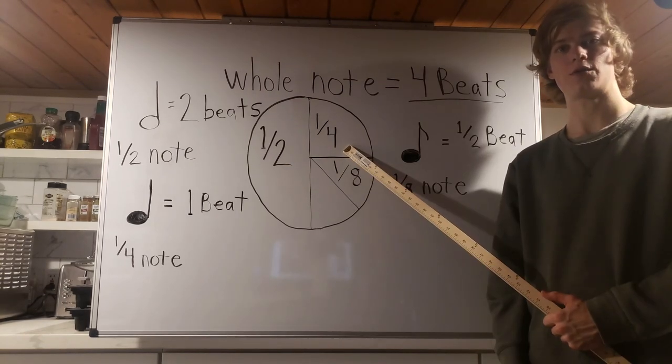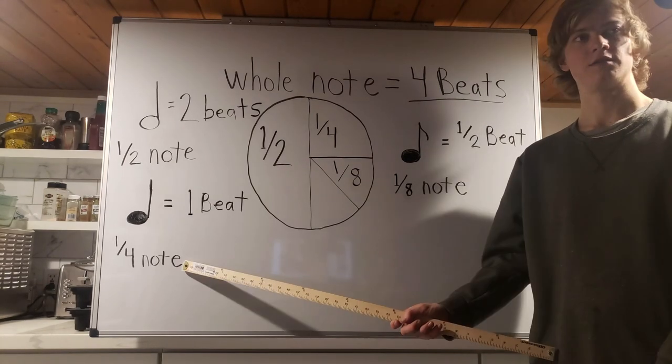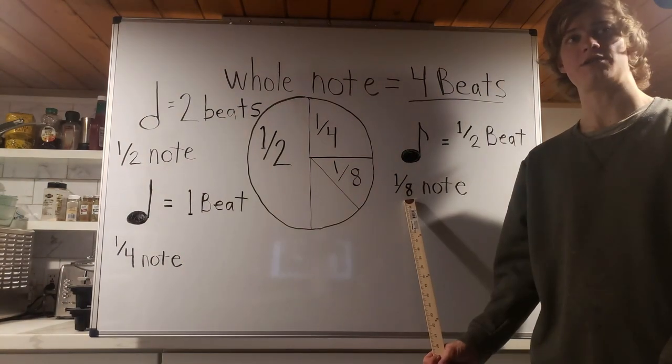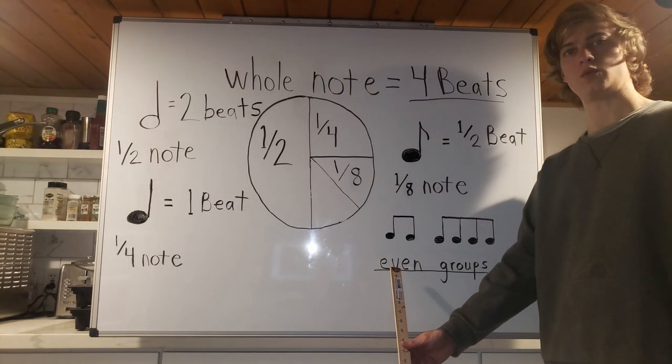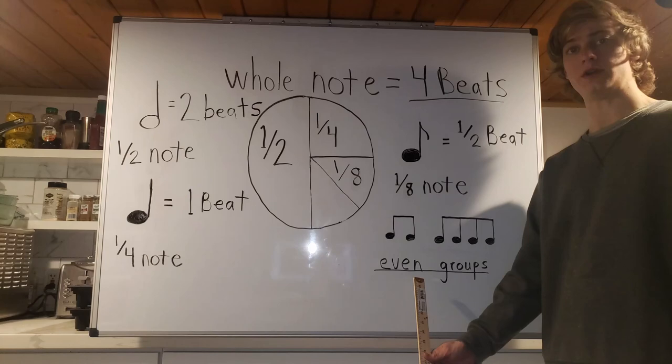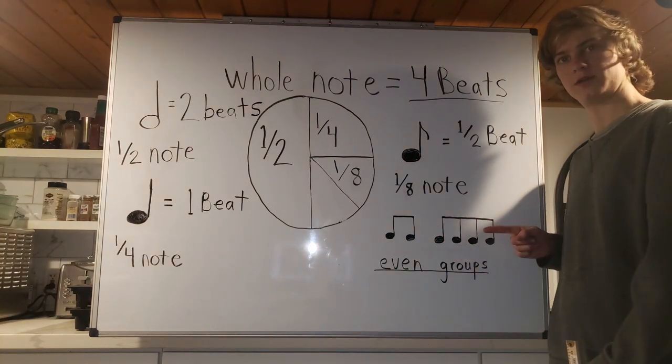Next, if we cut our quarter note in half, we get an eighth note. Since our quarter note is one beat, our eighth note is half a beat. You oftentimes will see eighth notes grouped together. When grouping eighth notes, they must be even numbers. And this is how you draw those grouped eighth notes.